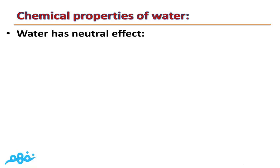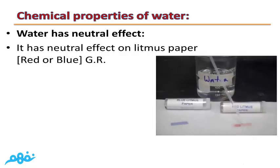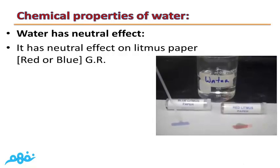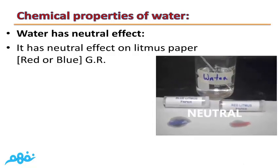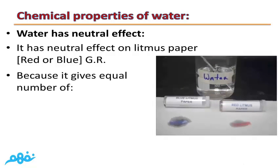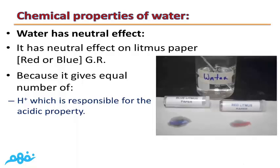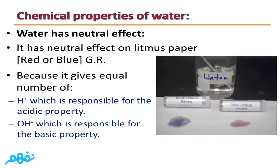The next property is that water has a neutral effect on litmus paper. As you can see from this video, water has a neutral effect on litmus paper, whether it is blue or red — and this is an important give-reason question. This is because water gives an equal number of positive hydrogen ions, which are responsible for the acidic property, and negative hydroxide ions, which are responsible for the basic property.